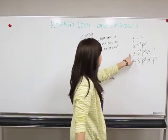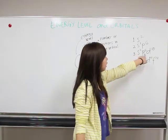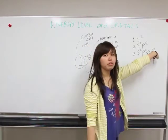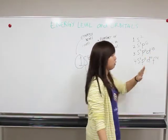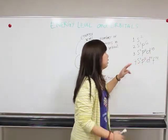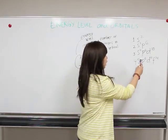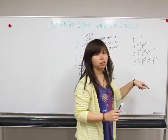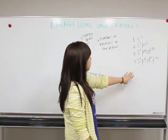And the next one is third energy level. We have one S orbital, three P orbitals, and five D orbitals. Because there are five orbitals of D, so D can hold until ten electrons. So the third energy level, there are 18 electrons in maximum.